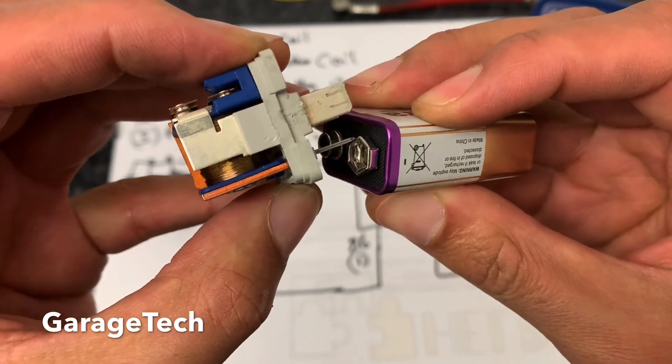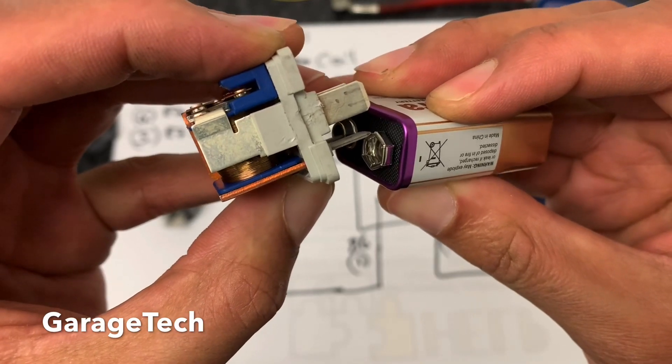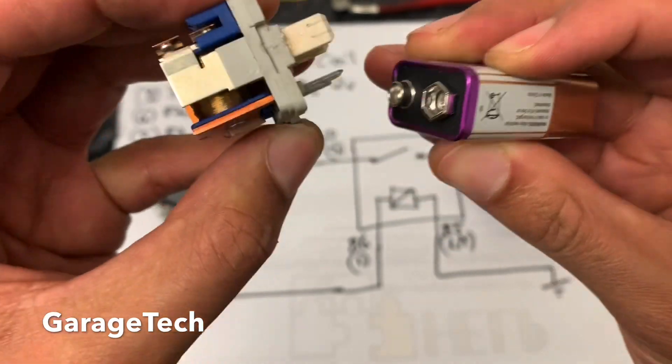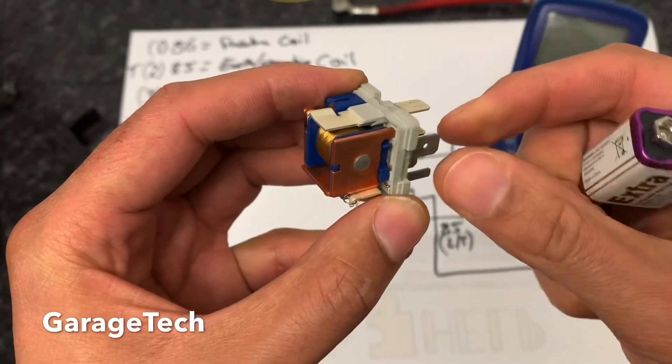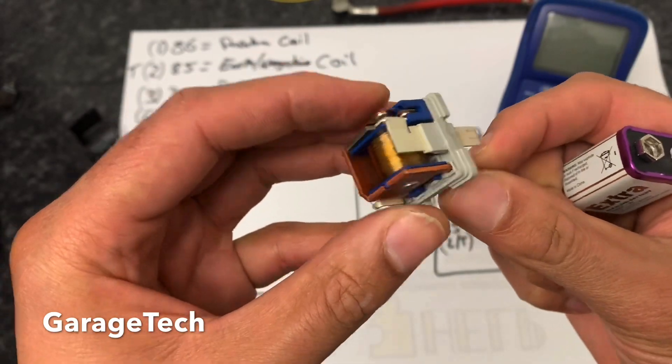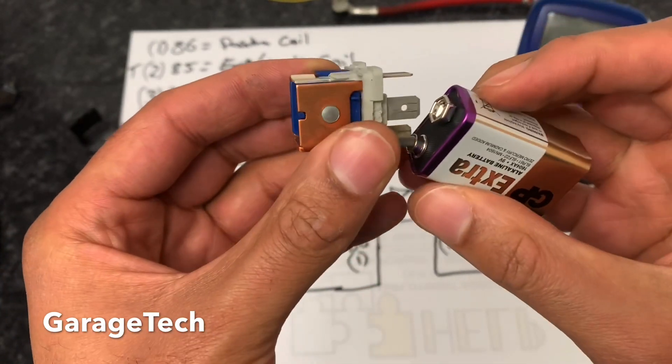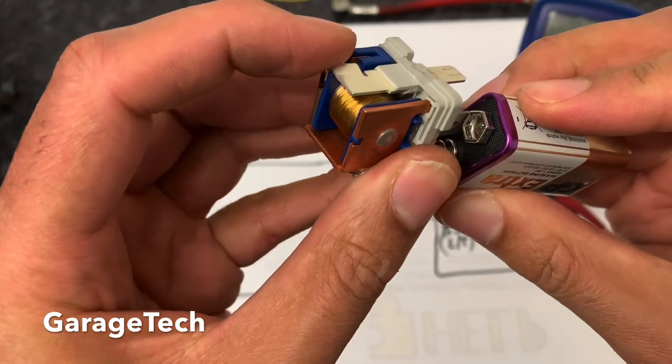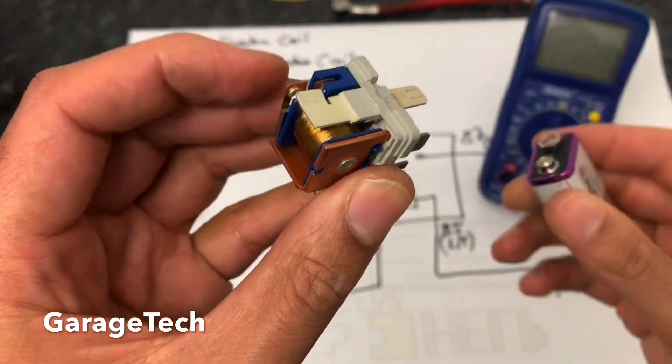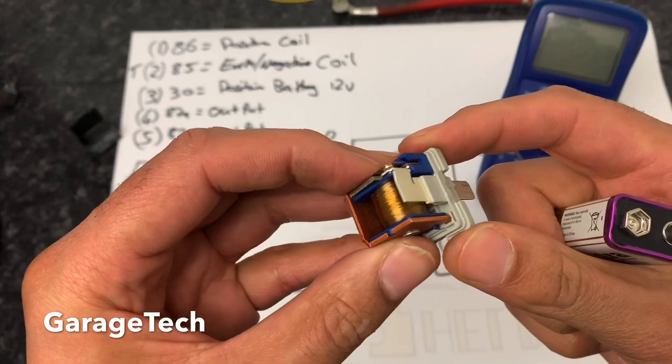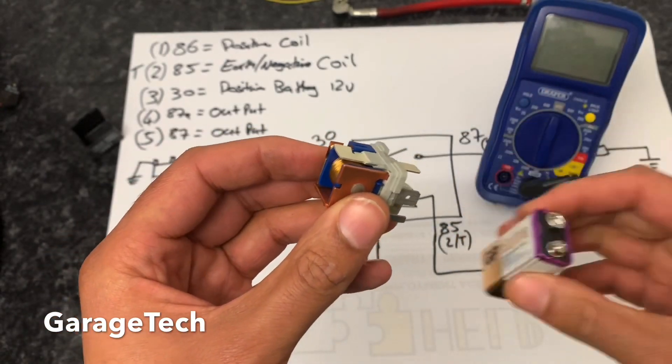You can see that that is working as it should do. Bear in mind this is just a nine-volt battery, and obviously your car runs on 12 volts, so if this little square battery is strong enough to pull and hold that switch contacts closed, certainly 12 volts should be okay. So that's one way to test that.